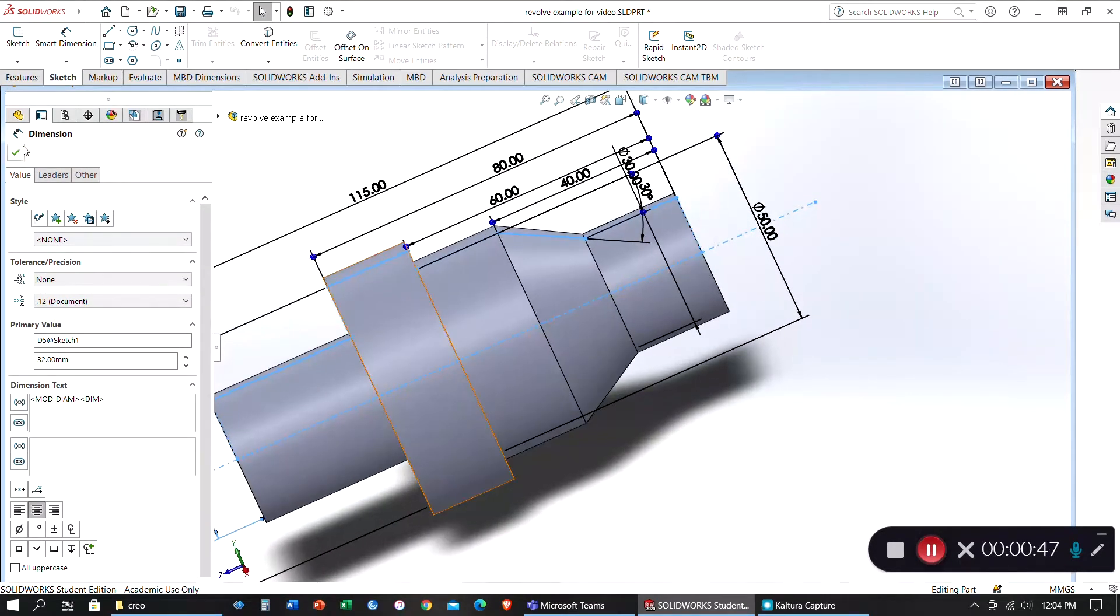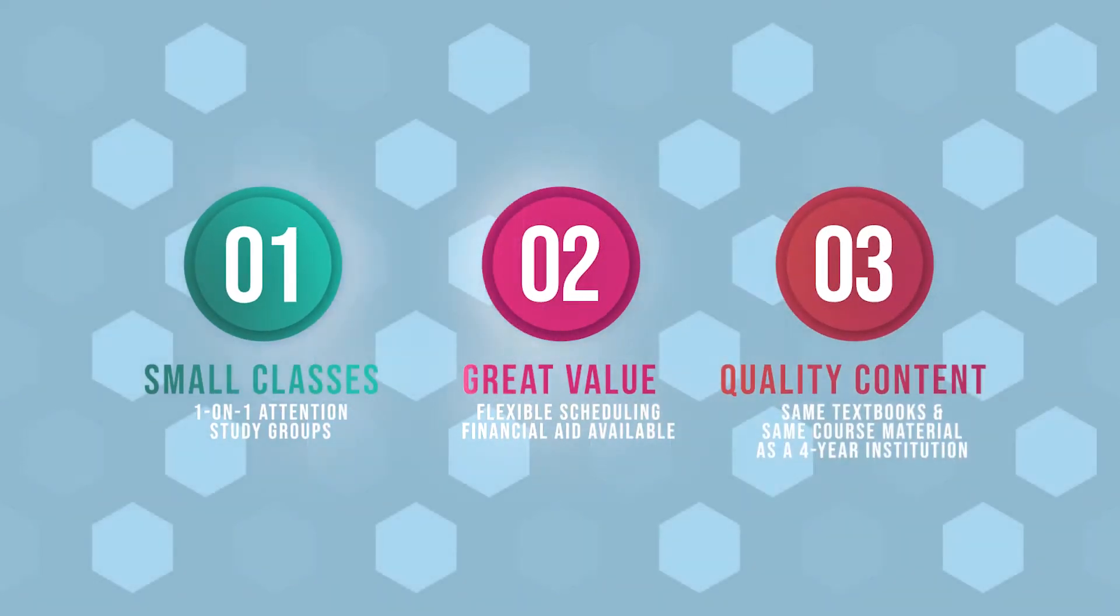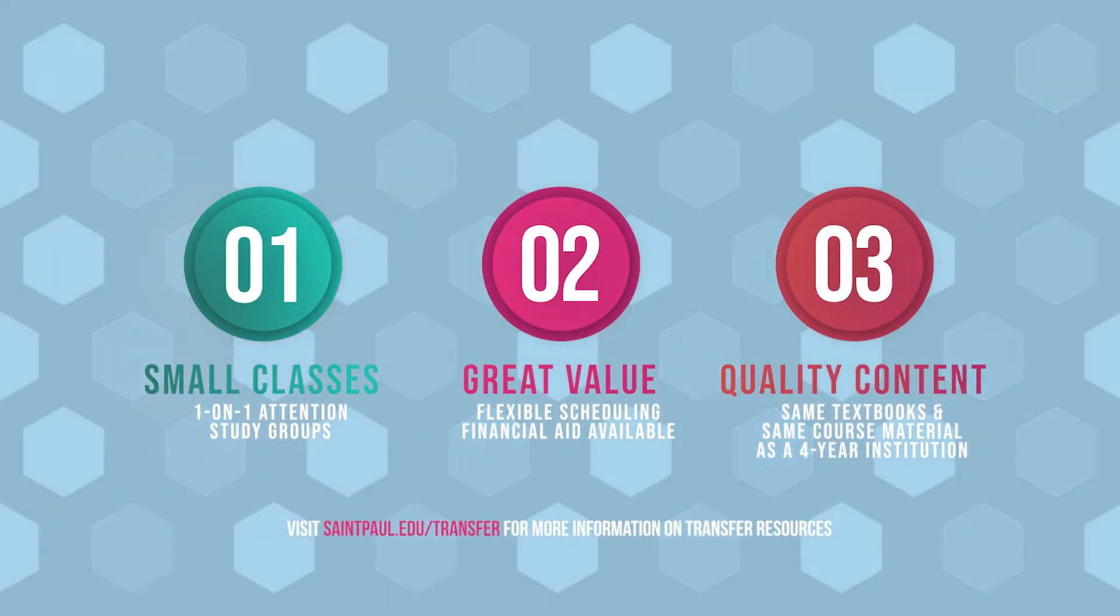The Engineering Broadfield program is a two-year program that's set up to transfer to a four-year engineering school. You get one-on-one instruction. It's also a lot cheaper but you're getting the same quality classes and we're covering the same exact content that they would at a four-year school.